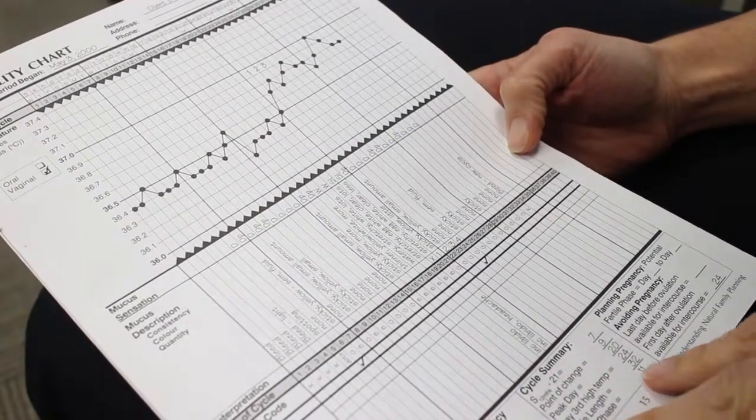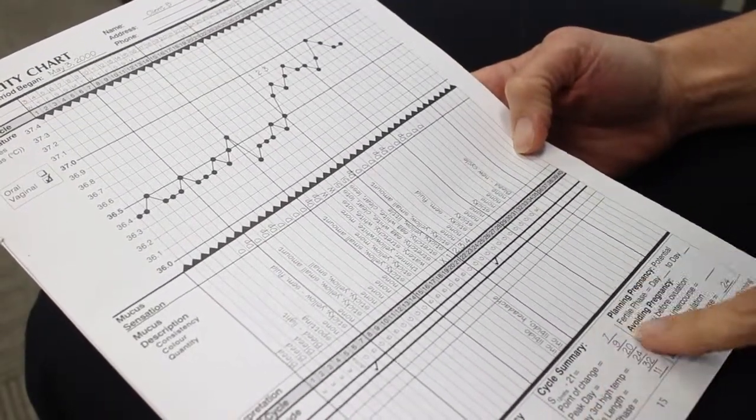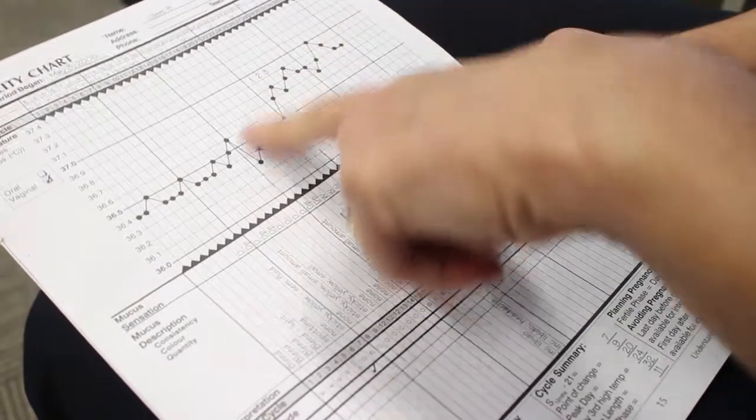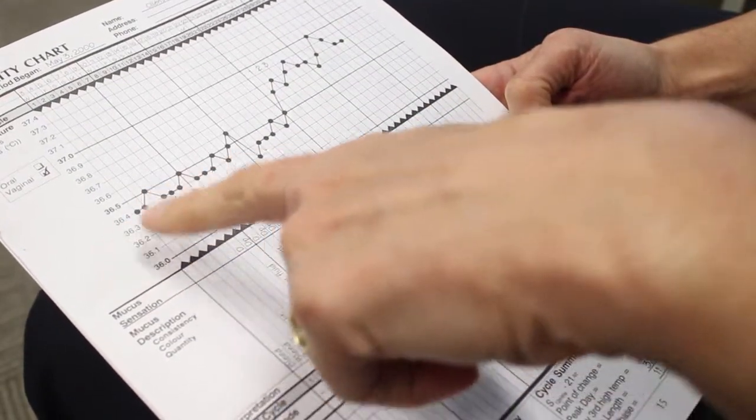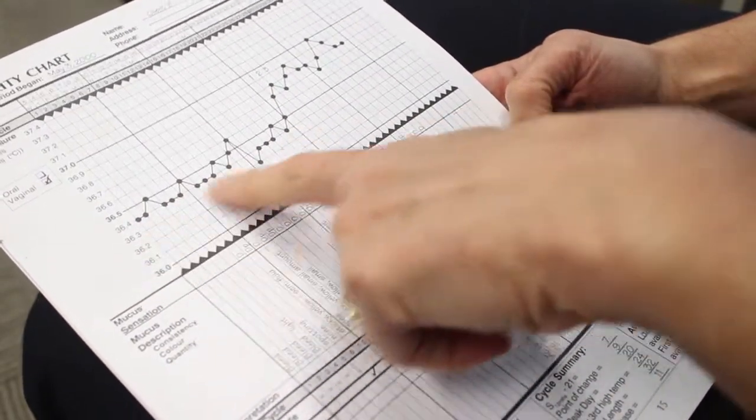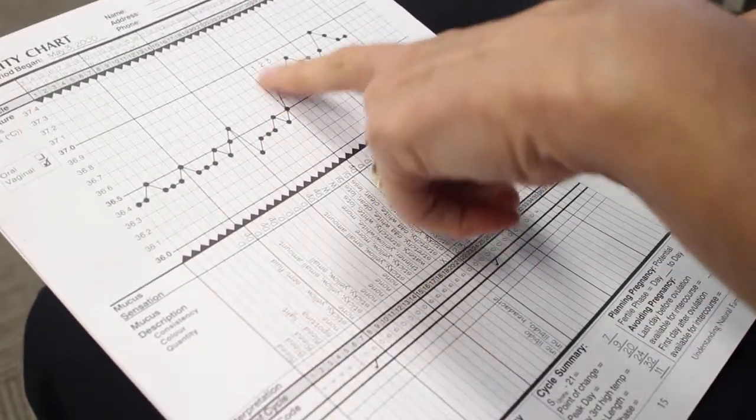This is an example of a Symptotermal method fertility chart. This is the temperature part of it, and we're looking for a biphasic pattern or two phases and a rise in the temperature.